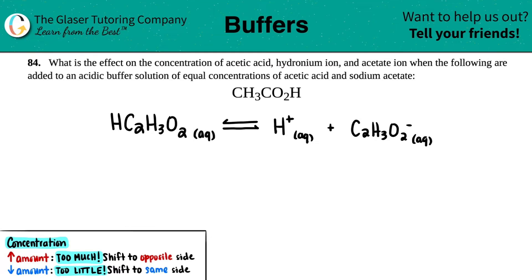Number 84. What is the effect on the concentration of acetic acid, hydronium ion, and acetate ion when the following are added to an acidic buffer solution of equal concentrations of acetic acid and sodium acetate? In this case, we are adding CH3CO2H.